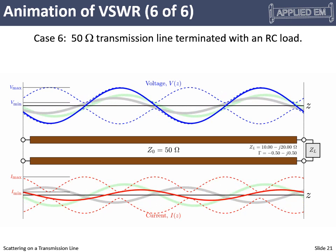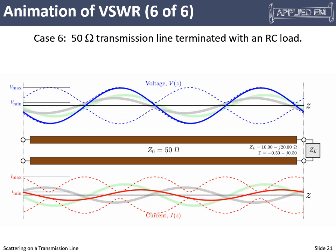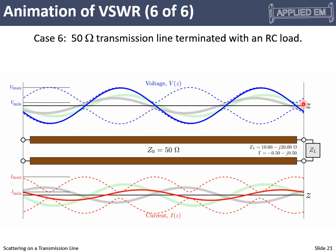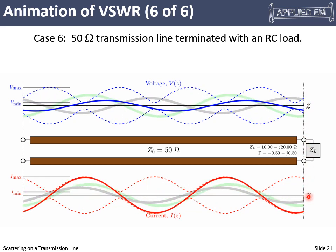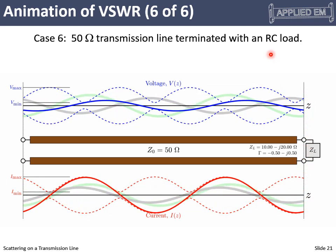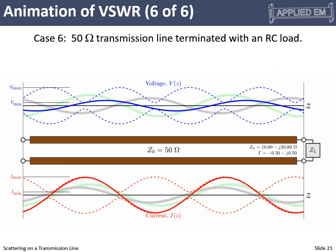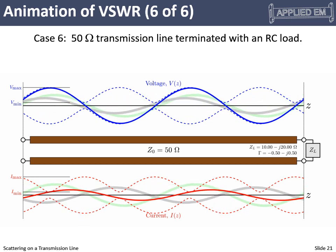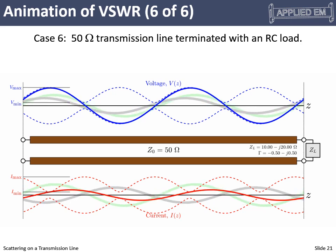Here is another complex load where I've simply swapped the sign on the reactive part. What we can see is that what the voltages and currents were doing at the termination has essentially swapped compared to the previous case. Everything else about the standing wave is the same — it repeats every half wavelength, minimums of E correspond to maximums of I, and maximums of E correspond to minimums of I.